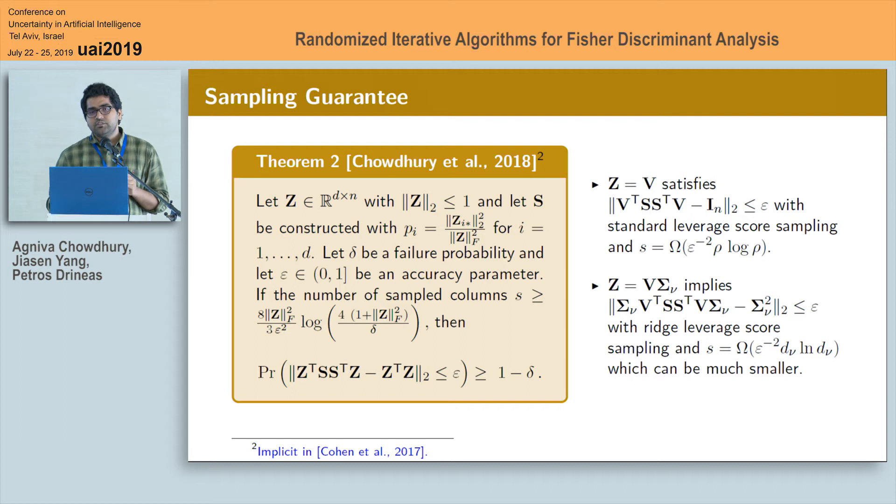Here d_nu is the effective degrees of freedom of the problem which we already discussed can be much smaller than rho therefore ridge leverage score sampling indeed results in a very similar guarantee as compared to the leverage score sampling but with a much smaller sample size requirement.